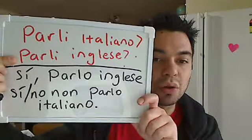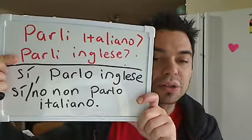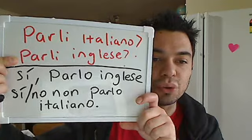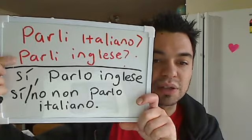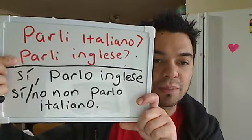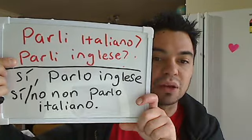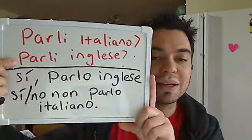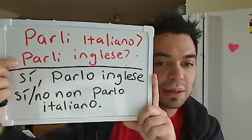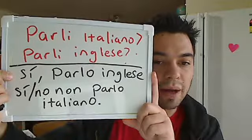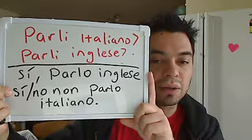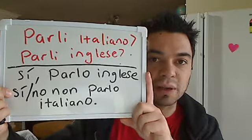The ending -I on 'parli' tells you it's directed at 'you' — the informal you. So all you have is the verb 'to speak' and the I on the end, which tells you it's addressing you informally. So: 'parli italiano,' 'parli inglese.'